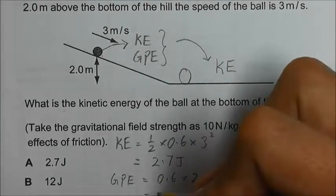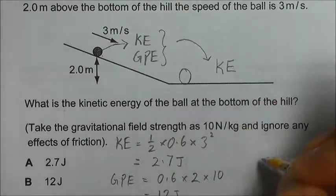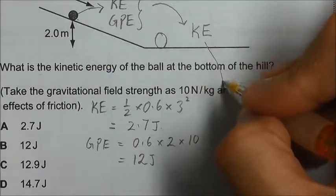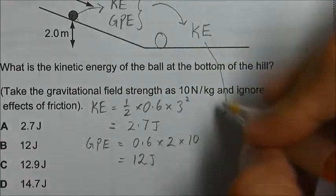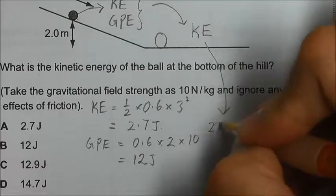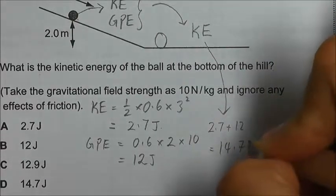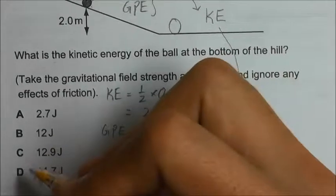and we will get 12 joules. So the total energy that it has, which is the total KE here, will be just 2.7 plus 12. We will get 14.7 joules. Answer D.